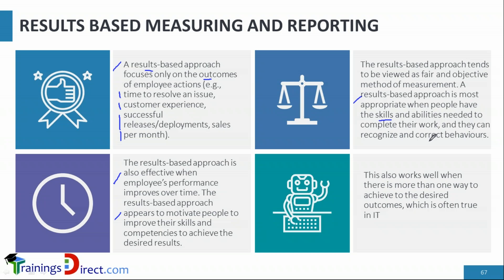Correctional behavior — for example, the ability to deal with time pressure — is also relevant. A person might have good technical skills to deliver results, but under time pressure people can make mistakes or lose motivation to perform their job. Therefore, results-based measurement can also help in understanding how behavior can be improved to some extent.